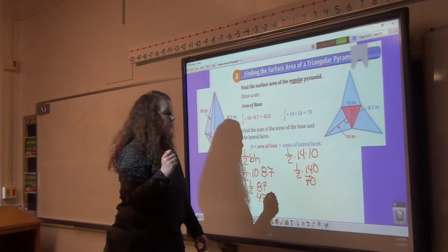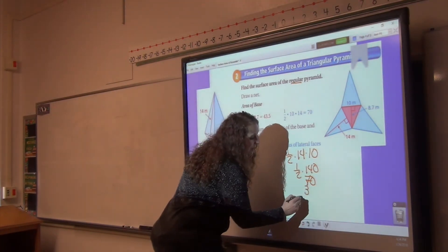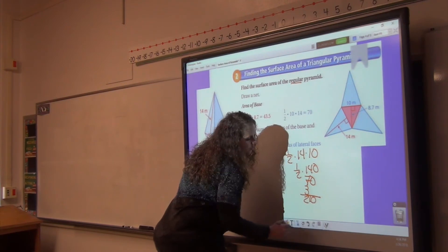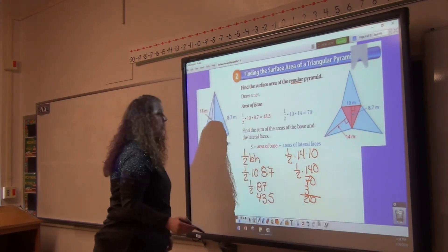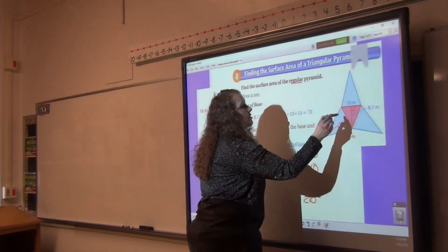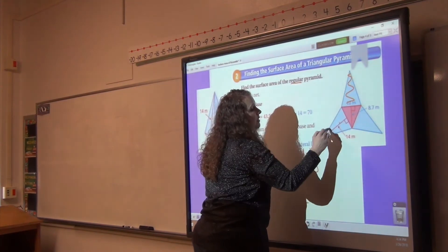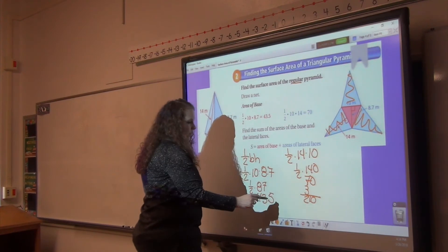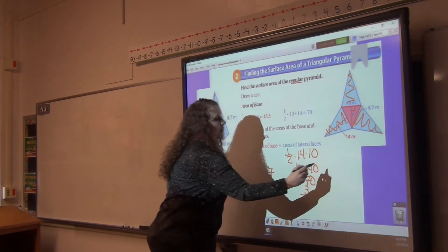That is one of my sides. I have three sides. So when I multiply by three, I get 210, which is this surface area for all three sides. I still need to add in the red surface area.